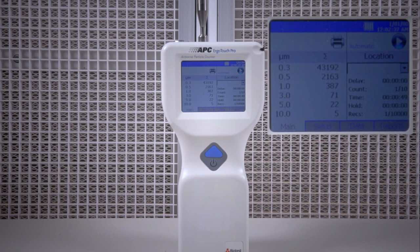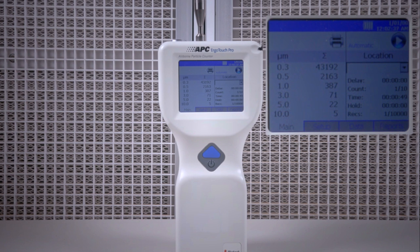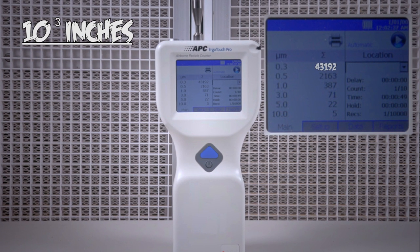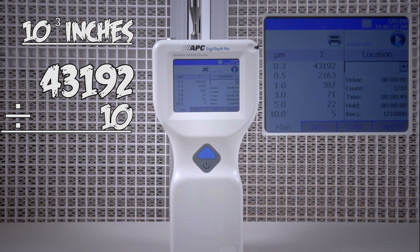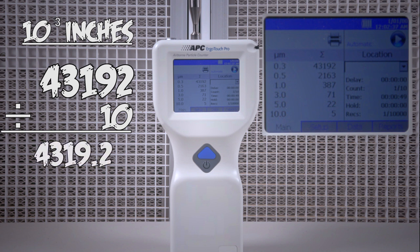These are our results. Now, in those 10 seconds, the unit processed roughly 10 cubic inches of air. So, if we divide our numbers by 10, this will give us the number of particles and their respective sizes in roughly 1 cubic inch of air.